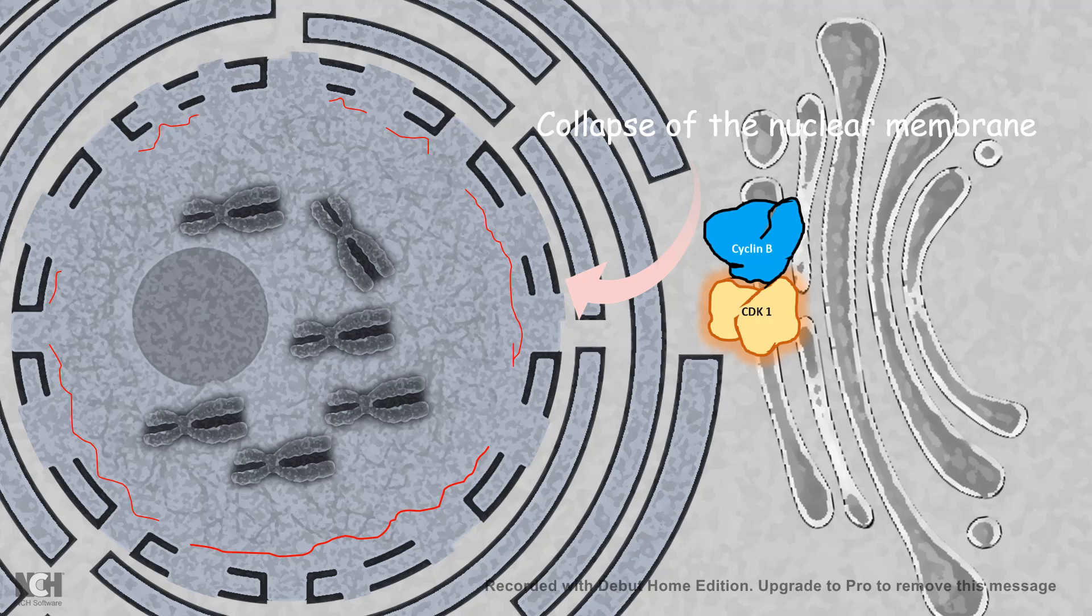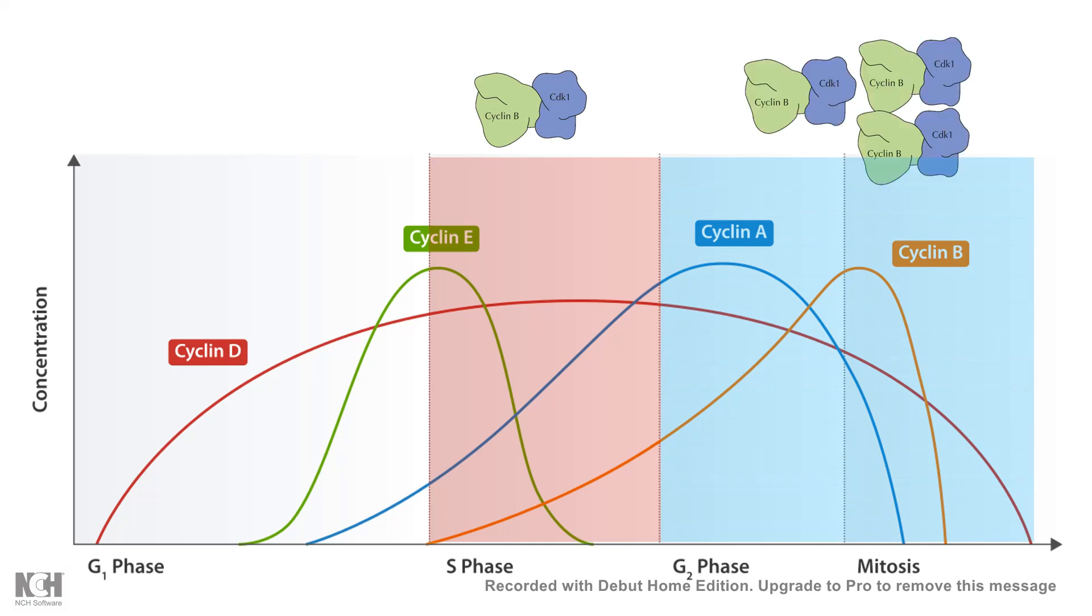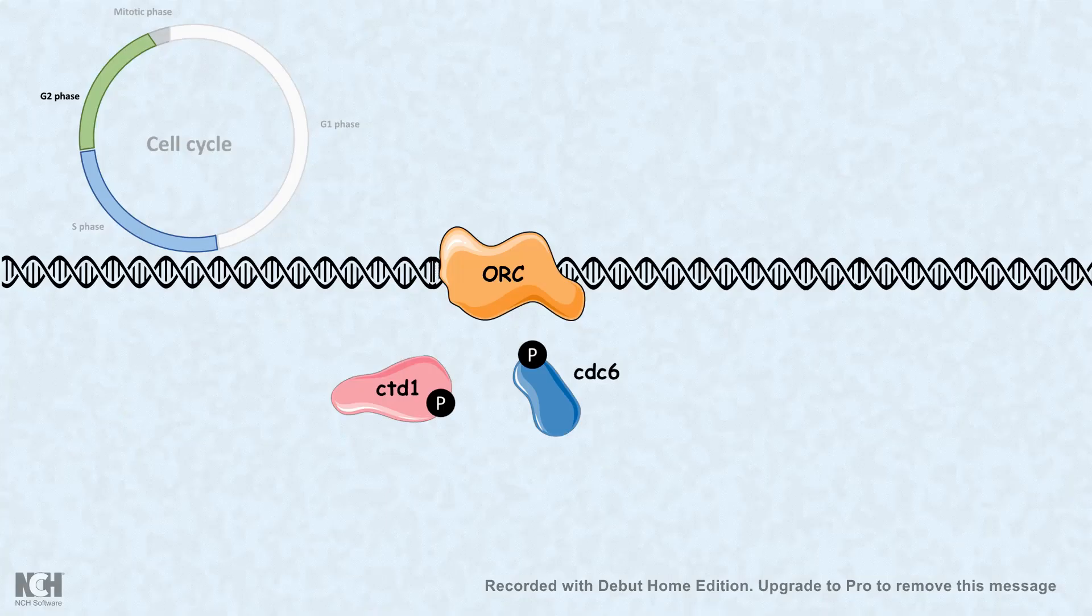Not only that, maturation-promoting factor's level started rising after S phase, and it really peaks at the end of G2 and mitotic phase. At this point of time, maturation-promoting factor is also important to prevent the re-entry into a replication state.